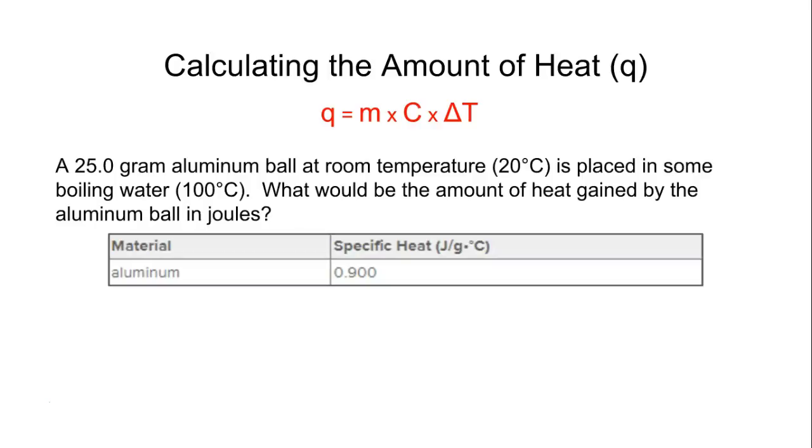So let's see what we got here. Imagine a 25 gram aluminum ball at room temperature, which is about 20 degrees, is placed in some boiling water at 100 degrees. What would be the amount of heat gained by the aluminum ball in joules? Now in order to do this, we need to know the specific heat. So the specific heat of aluminum is 0.900 joules per gram dot degrees Celsius. So let's see what we're trying to do. We're trying to find out the amount of heat, which is our Q. So essentially, we need to take the mass times the specific heat times the change in temperature.